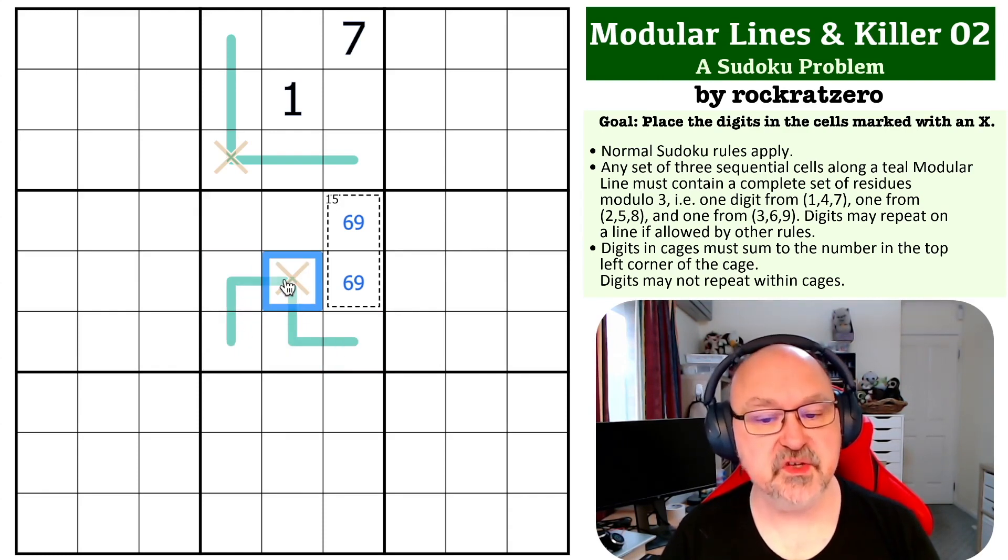Which means this has to be from the same set as this. Because otherwise, if this is from the same set as this, then I'll have four of the same set. This is the only thing that has got a single thing to give, and I've already used two of the 369, so this has to be the three.